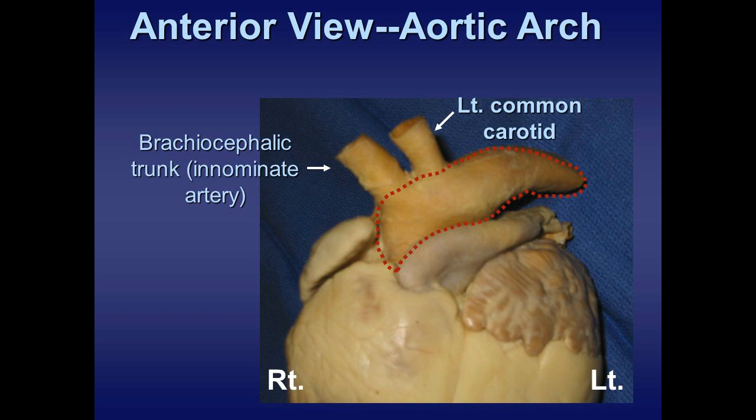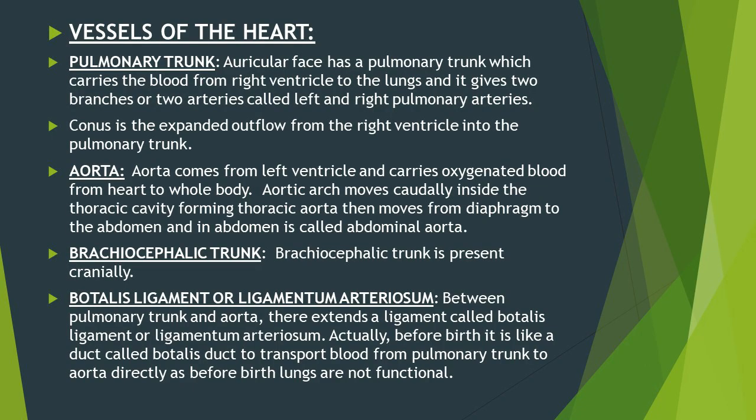Between the pulmonary trunk and the aorta there extends a ligament called the botallus ligament or ligamentum arteriosum. Before birth this was a duct called the ductus botallus, which transported blood from the pulmonary trunk directly to the aorta because the lungs were not functional. After birth this duct becomes the ligamentum arteriosum.